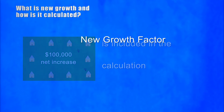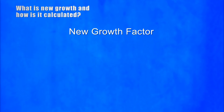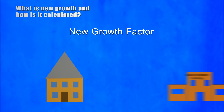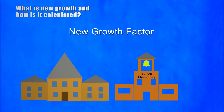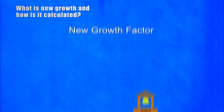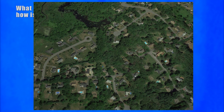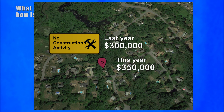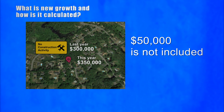The new growth factor does not include the increased assessed valuation of a community's tax base that comes from the higher market value of property. The valuation increase has to result from a change in the physical condition, taxable status, or taxable unit of a property. For example, a single-family house valued at $300,000 last year and $350,000 this year with no construction activity is simply worth more in the current marketplace — that additional $50,000 in value is not included in the new growth calculation, even though it increases the total valuation of the community's tax base.